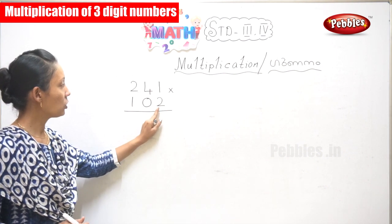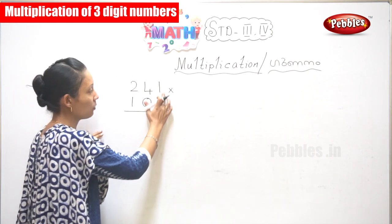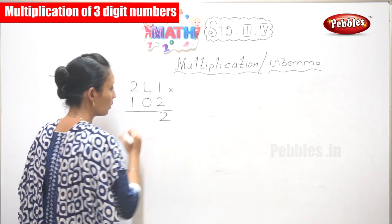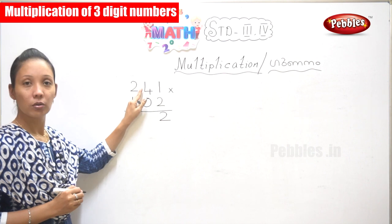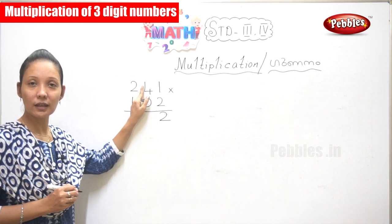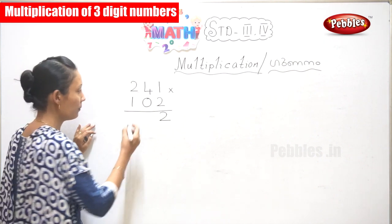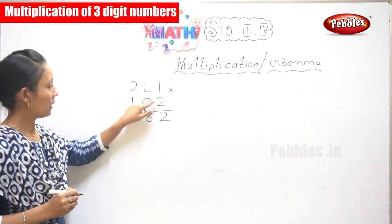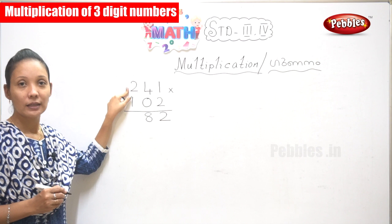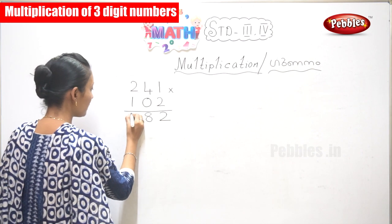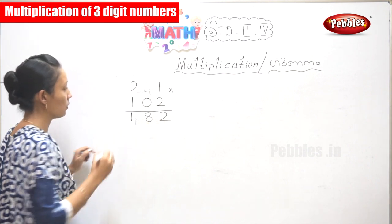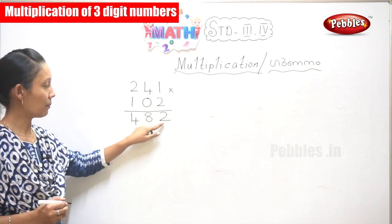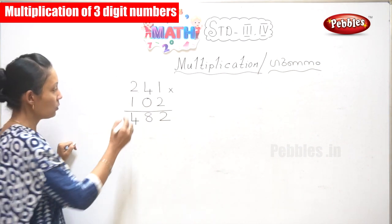So 2 into 1 — that is 2. So 1 times 2 is 2. Now 2 into 4 — that is 8. 2 into 2 — that is 4. So 4, 8, 2. You have finished multiplying with 2. And this is your answer here.